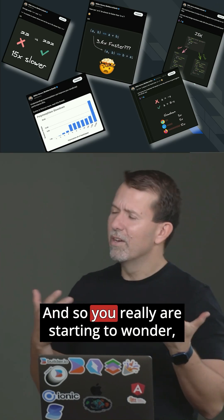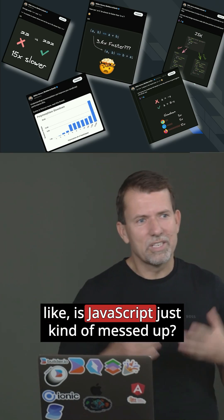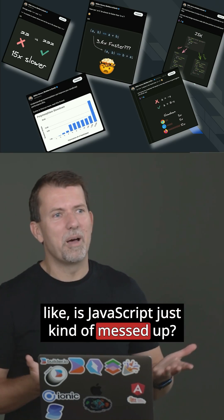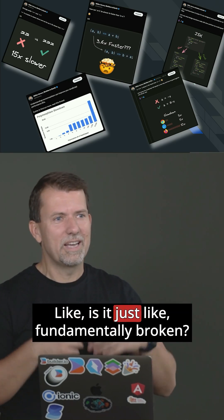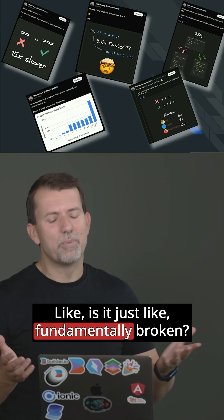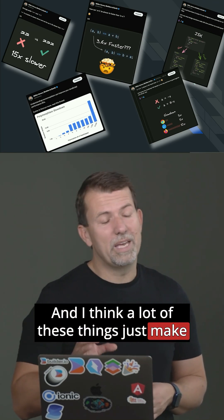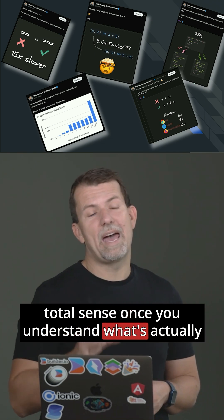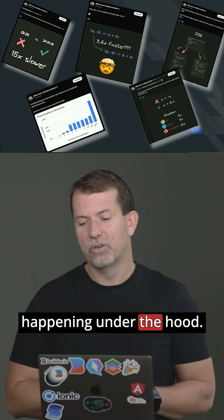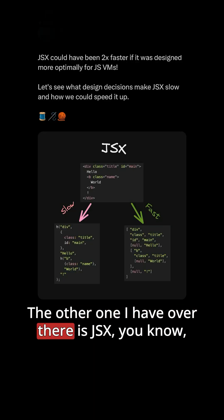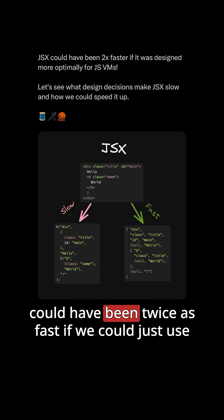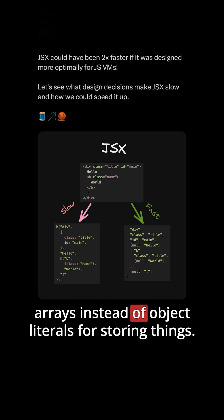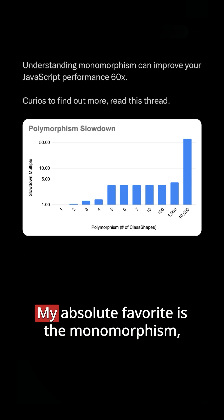So you really are starting to wonder, is JavaScript just kind of messed up? Is it just fundamentally broken? I think a lot of these things just make total sense once you understand what's actually happening under the hood. The other one is that JSX could have been twice as fast if we could just use arrays instead of object literals for storing things.